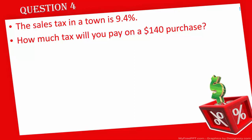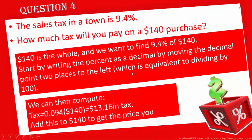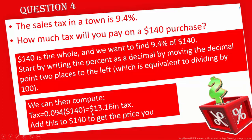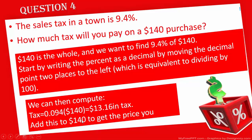Coming back to the PowerPoint, just as we found on the whiteboard, we found that we would have to pay an extra $13.16 in tax. This is the amount we have to pay in tax; our purchase was $140, and we would add that tax to our purchase when we go shopping.